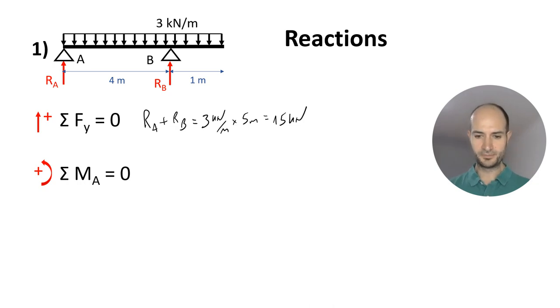Now, if we take moments on A, we have RB times 4 meters, and then on the opposite direction we have the line load, so it's going to be 3 kN per meter. The total load is 3 times 5 and then the arm from the center of the line load, so that's 2.5 meters. That must equal zero. Therefore, we get that RB equals 9.4 kN. And if RB is 9.4 kN, then RA equals 15 minus 9.4 kN, so 5.6 kN.